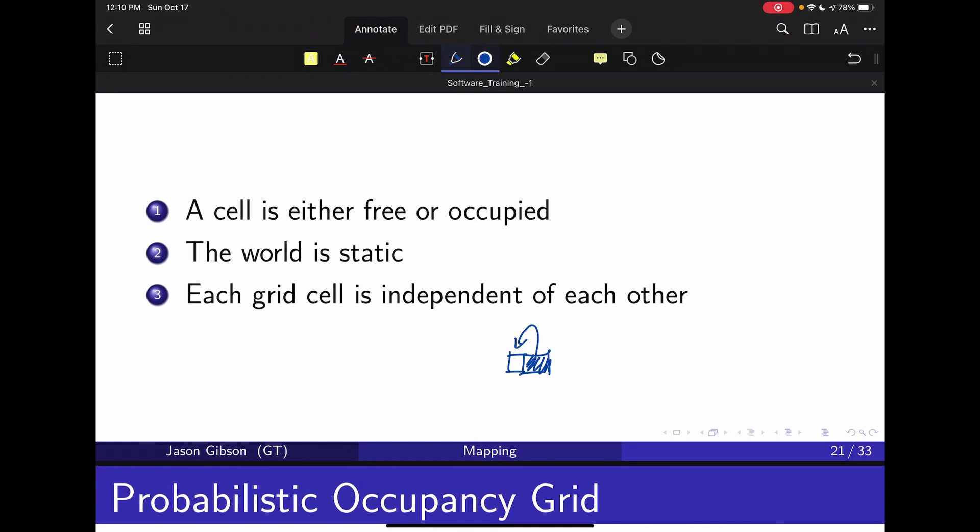This is not necessarily true because a lot of times our sensor models would make more sense for us to represent it this way, but this allows us to break the problem into estimating if each grid cell is occupied or not occupied independently, rather than trying to estimate everything together, which would make the probability distribution significantly more complicated.